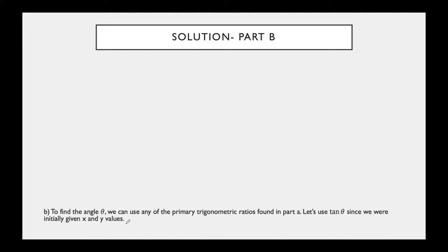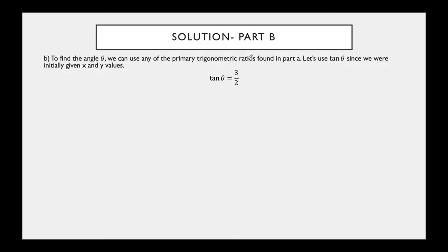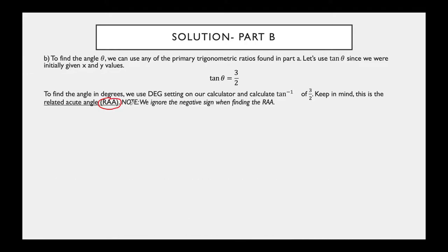To find the angle, pick one of the three ratios — I suggest using tan θ since x and y were given directly in the question, so even if you made a mistake calculating r, this part will be correct. To find the related acute angle, ignore the negative sign and make it positive — we're just finding that one acute angle. Once you know the related acute angle, you can use it to find the principal angle.